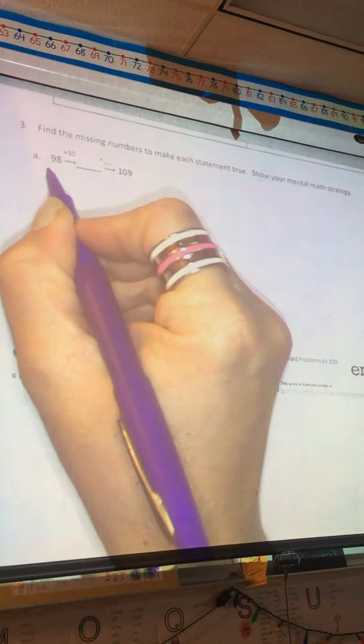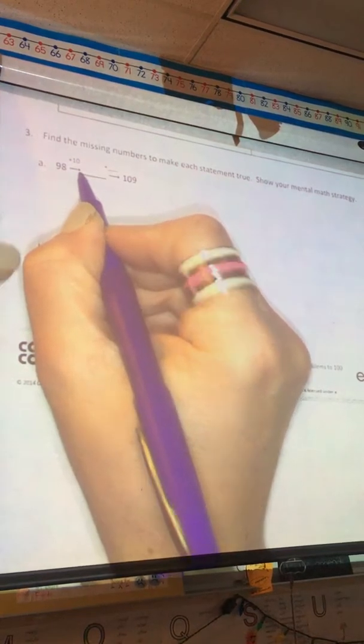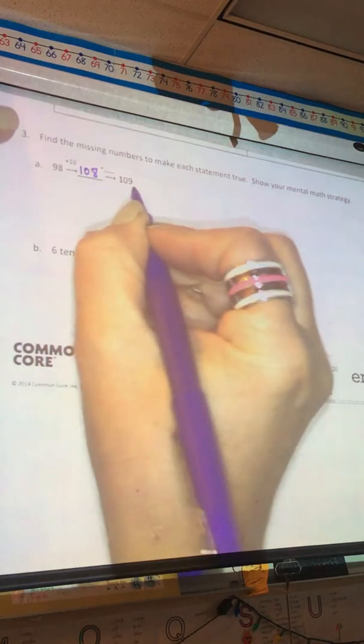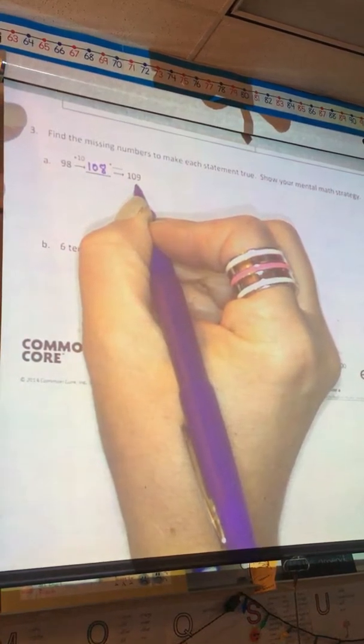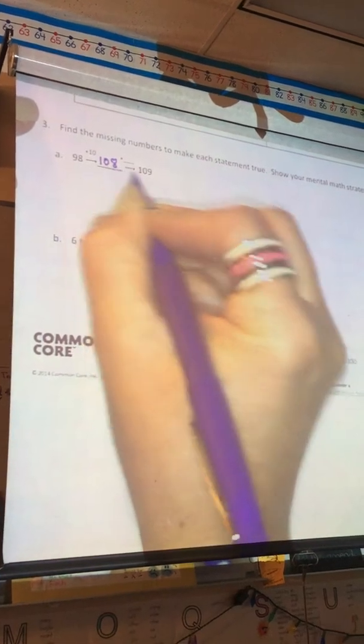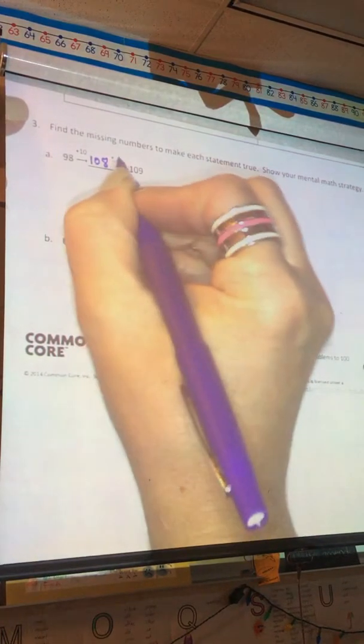Letter A, if I start with 98, and using the arrow way, I add 10, I get 108. And then it shows me my final answer is 109, so I need to think, what do I need to do to 108 to get to 109? And I know that that's add 1.